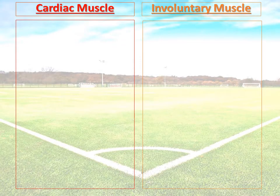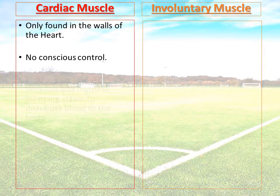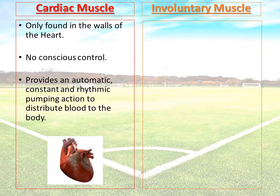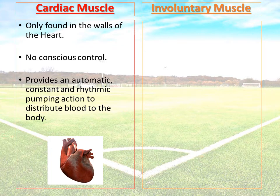Cardiac muscle is only found in the walls of the heart, and as such you have no conscious control over it. This muscle works automatically without you thinking about it, providing a constant and rhythmic pumping action which allows blood to be pumped out of the heart and distributed to the rest of the body. It's the muscle you can feel working if you place your hand on your chest.